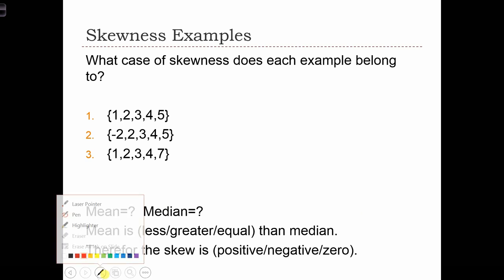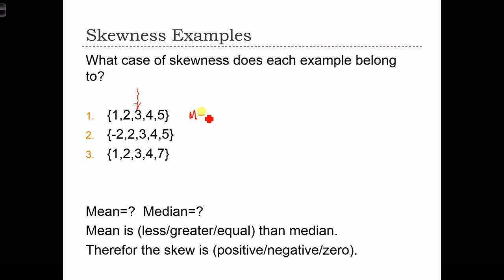In the first case, we have the mean value of this distribution equal to 3. The median of this distribution is also equal to 3. 3 is the middle value. So mean equals median, and this implies skew S equals 0. So there's no skew. It's a symmetric distribution.